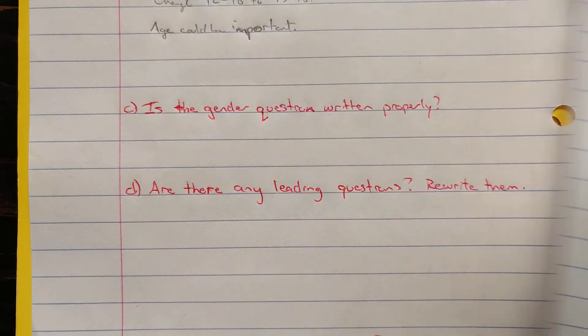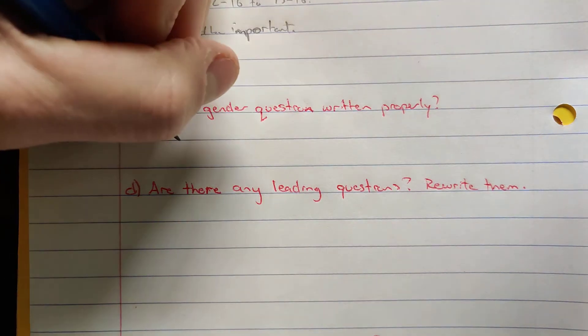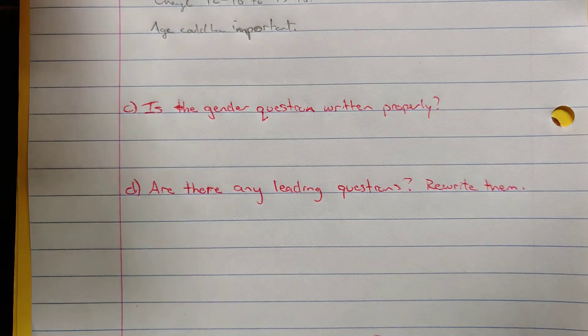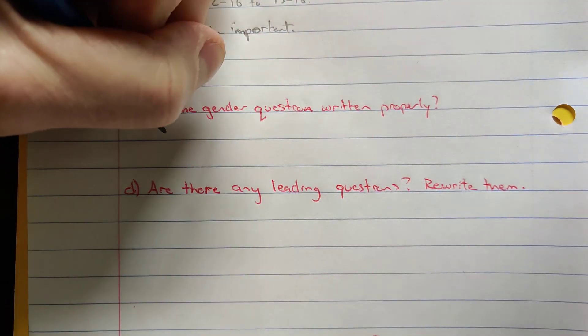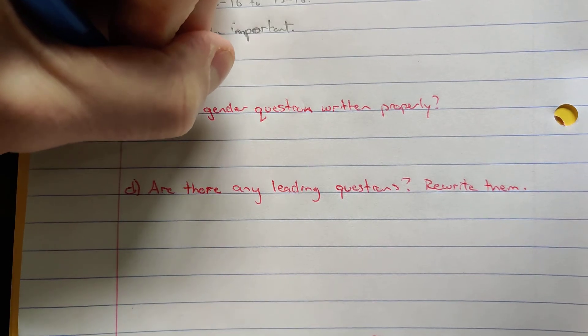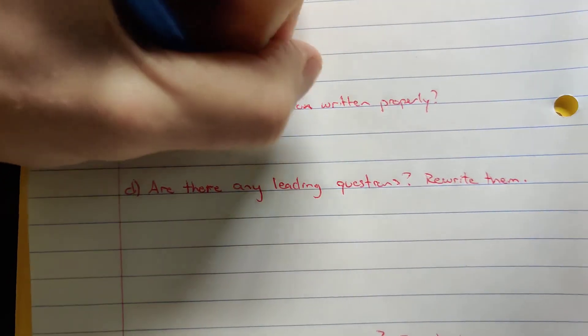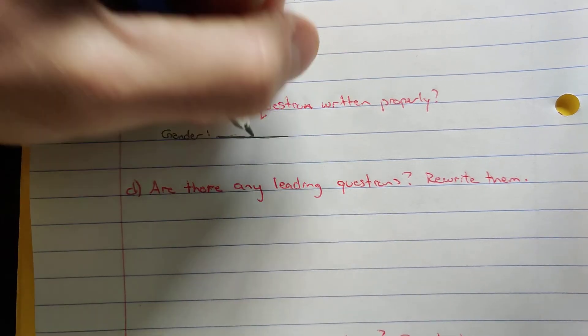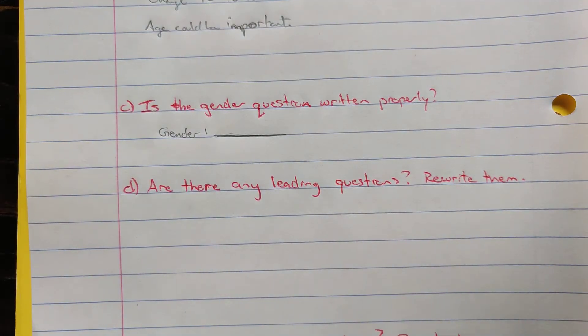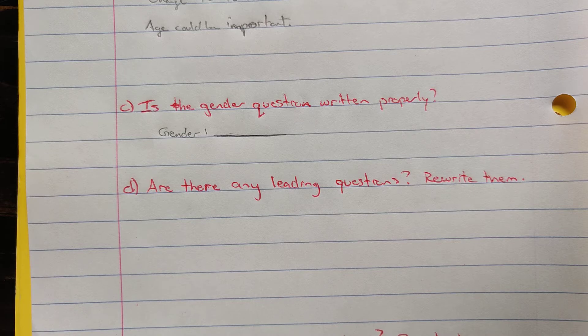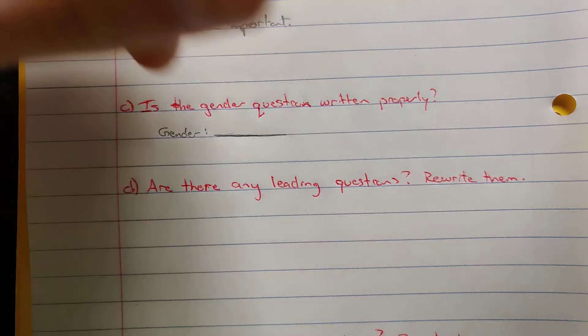So you would want to change that. If you need to know the gender, then either just ask straight out gender and leave a space for them to identify however they want. Where this can lead to issues is when you have someone giving you poor survey answers or trying to be funny. And we've had that in the past.